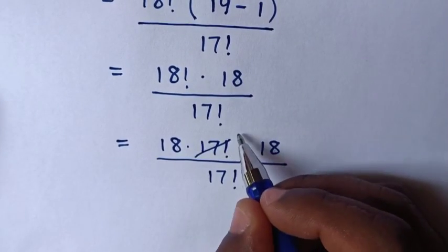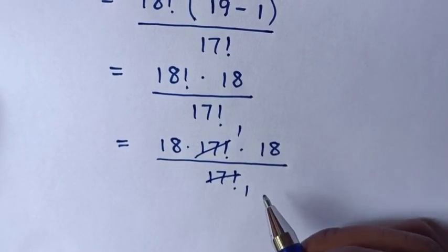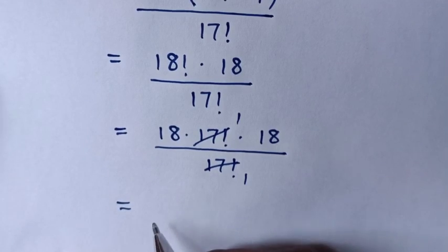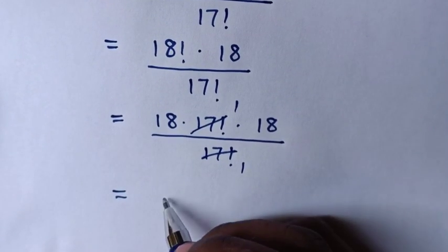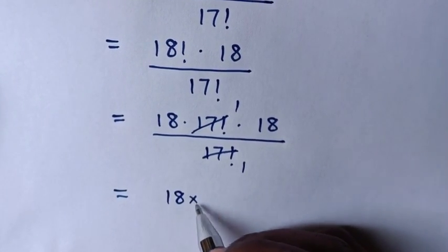Then to simplify, this will cancel by 1 and this by 1. So it will be equal to this times this is 18 times 18.